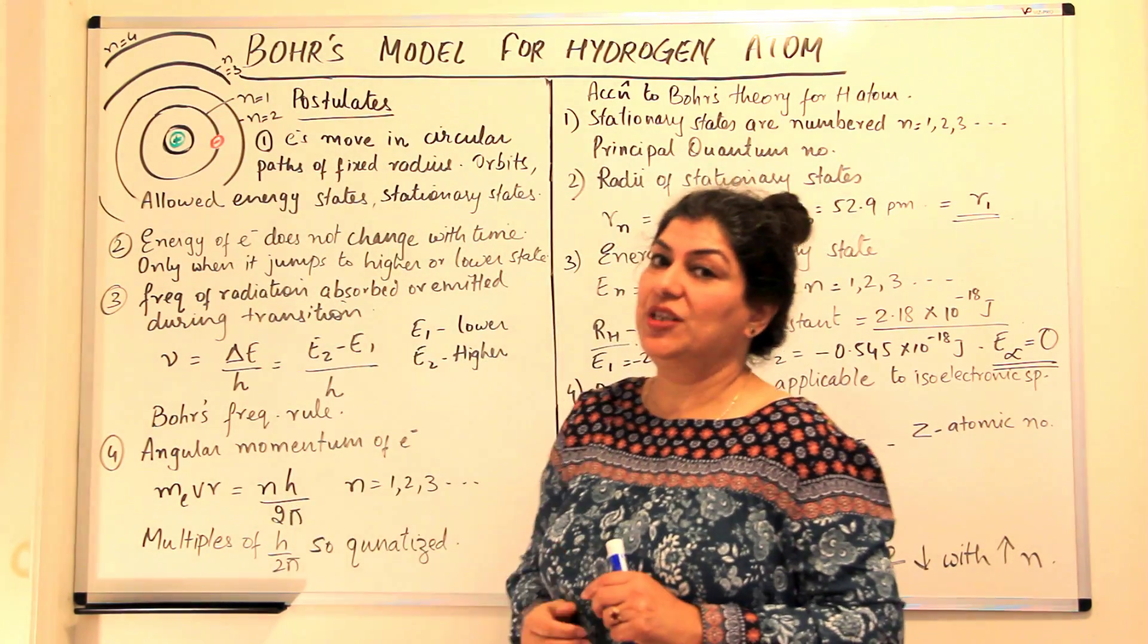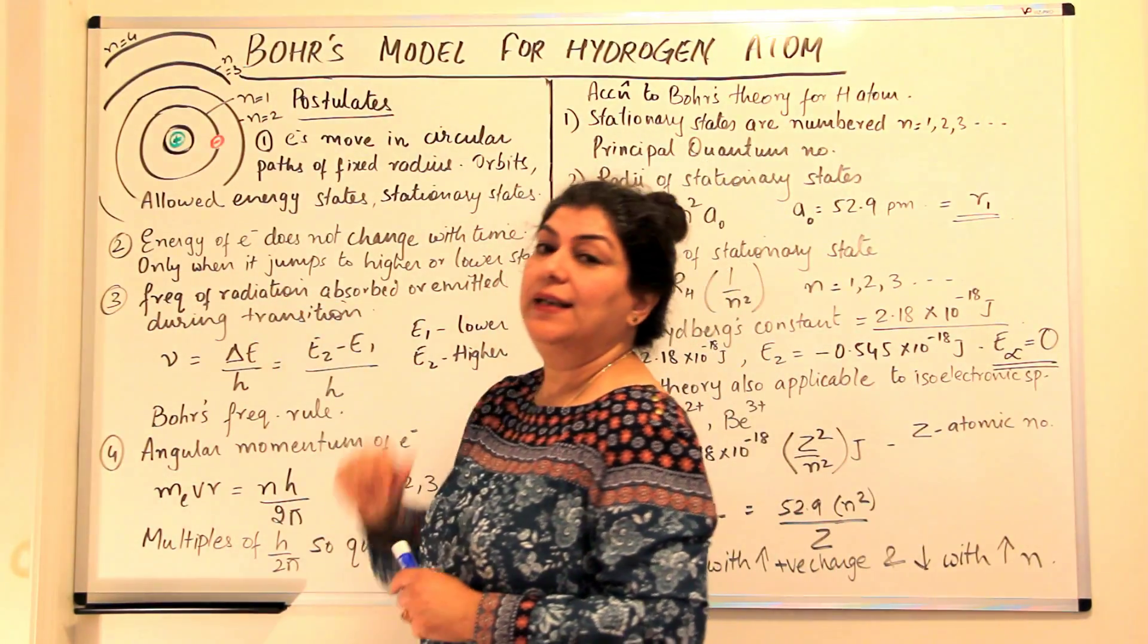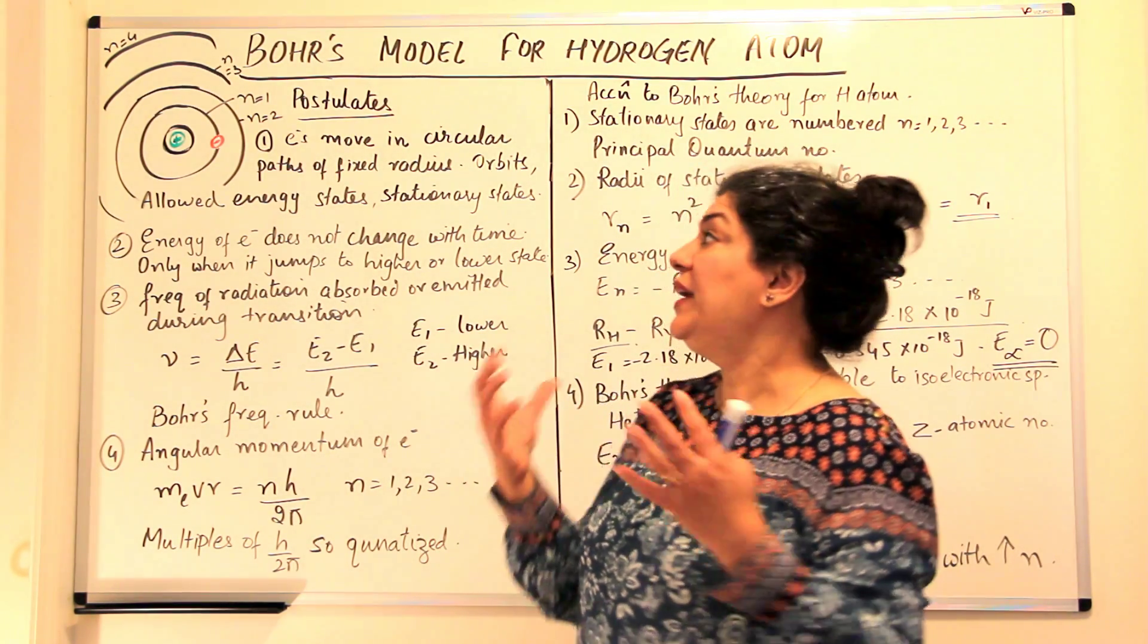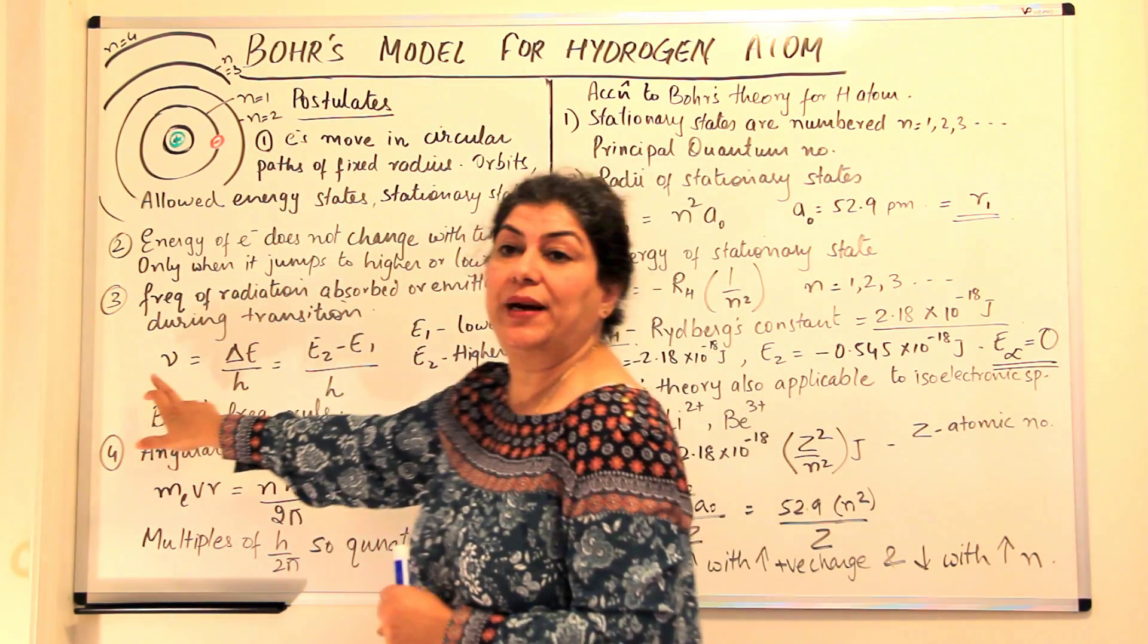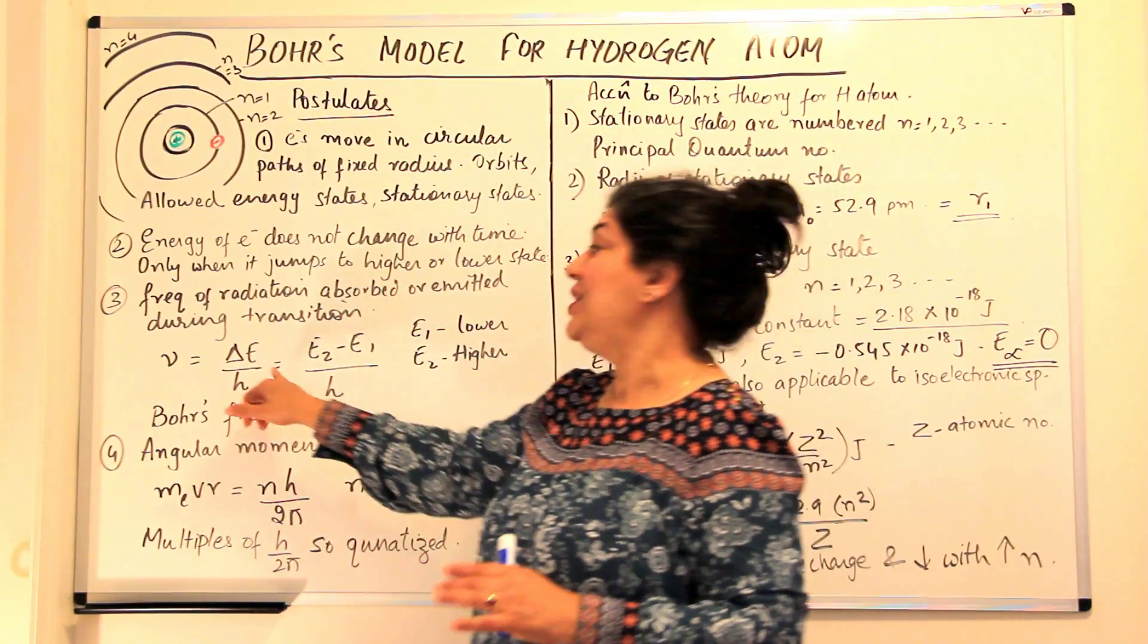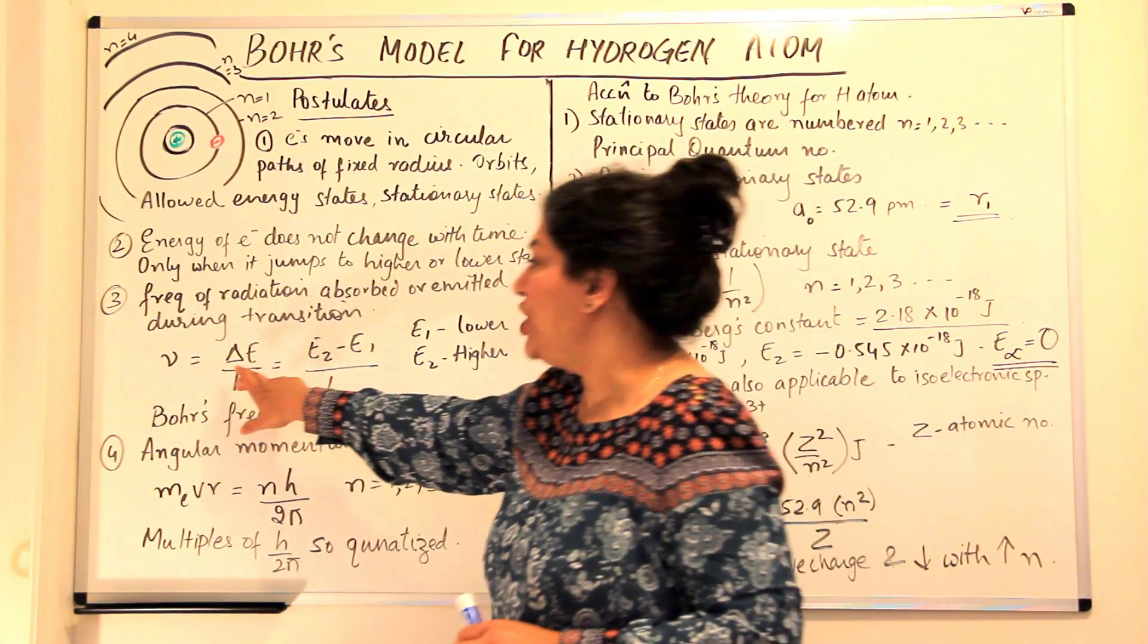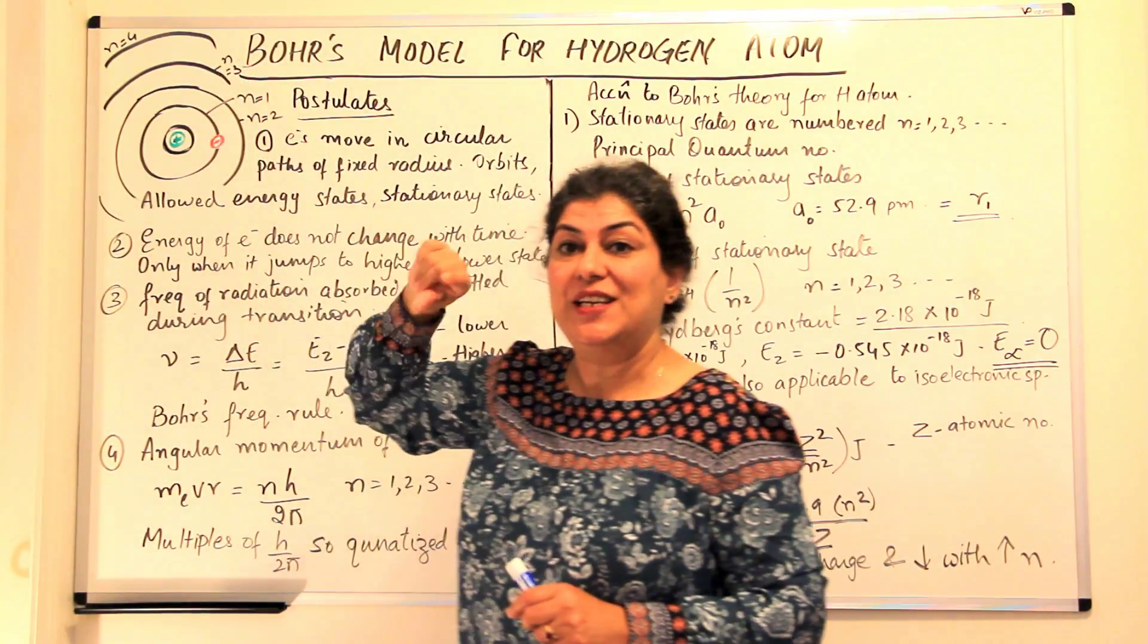The third postulate was that the frequency of radiation absorbed or emitted during this jump, during this transition, you can calculate. The frequency is given by this formula. What is frequency? Energy. Energy is equal to H mu. So frequency mu will be E over H. Therefore change in energy would be, since there's a difference between the energy of two energy states, this difference in energy would be delta E.